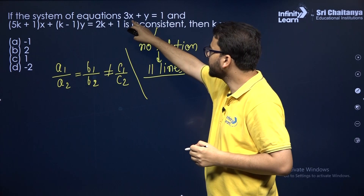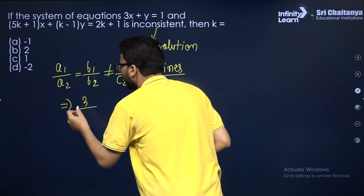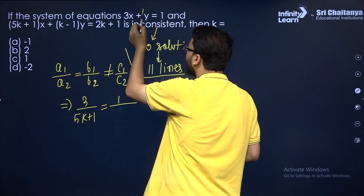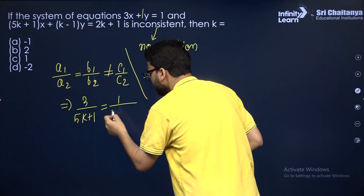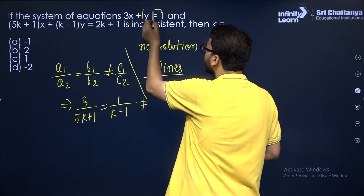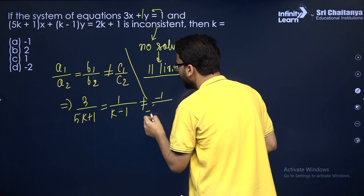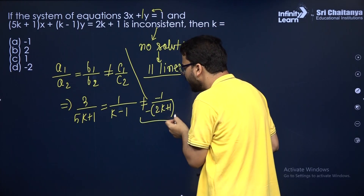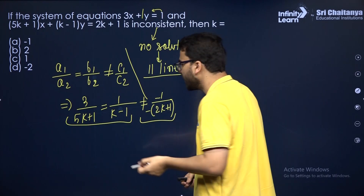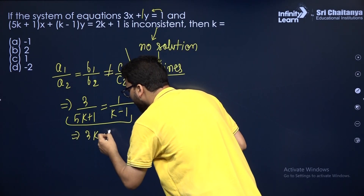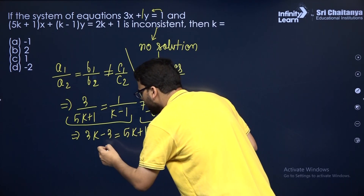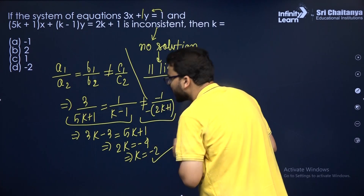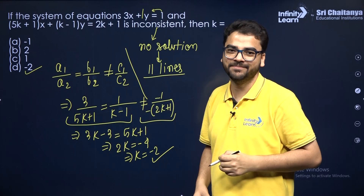A1 is the coefficient of x, which is 3. A2 is the coefficient of x in the second equation, that is 5k plus 1. B1 is 1 and B2 is k minus 1. C1 by C2 is minus 1 over minus of 2k plus 1. To find k, we use A1 by A2 equals B1 by B2: 3 over 5k plus 1 equals 1 over k minus 1. Cross multiplying: 3k minus 3 equals 5k plus 1, giving 2k equals minus 4, so k equals minus 2. I hope it is clear.